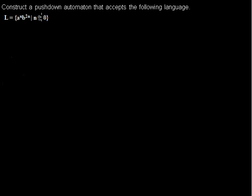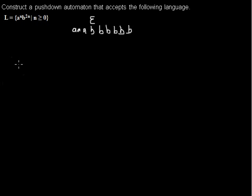I like to give example words so that while constructing I can make sure the automaton accepts those words. First, the empty string is in the language. Then I take an example word of three a's and six b's. We can construct an automaton that accepts languages by an empty stack or by a final state, and the task doesn't tell us which one to do, so I will do both at the same time.